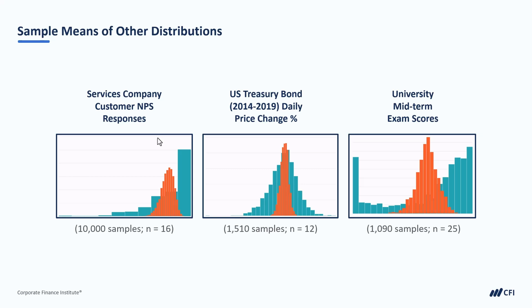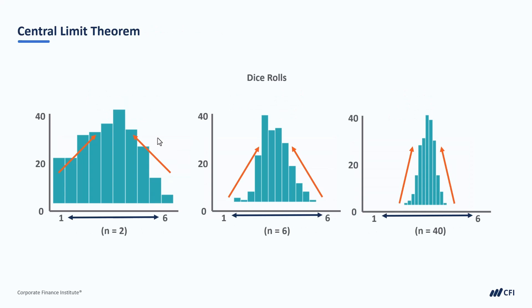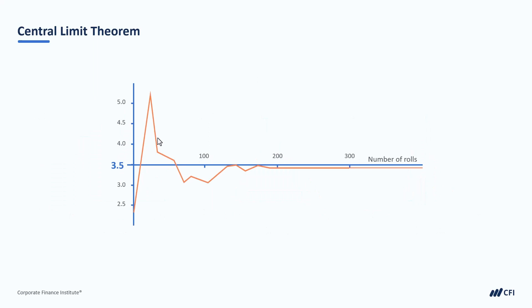Another aspect of the central limit theorem is that as our sample size grows in size, its spread decreases, and the spread of our sample means will be closer to the true mean. This makes sense if we consider the law of large numbers. As the size of our samples increase, their mean tends towards the mean of the population.